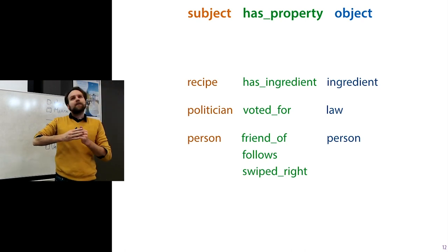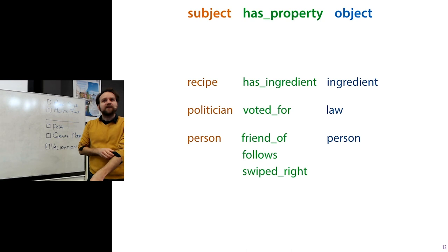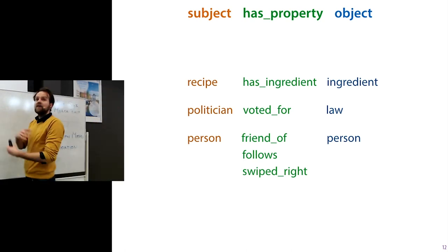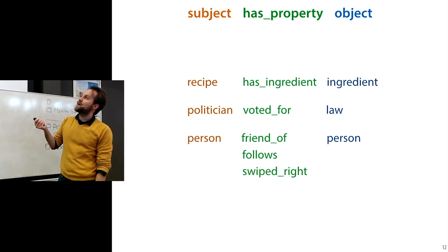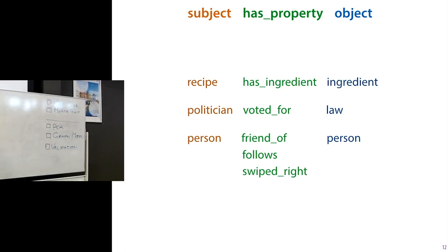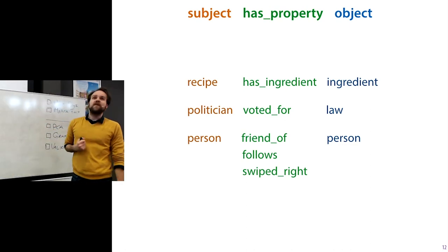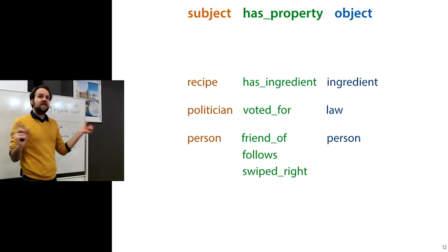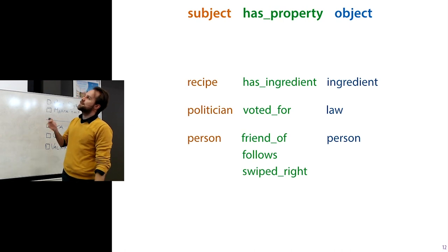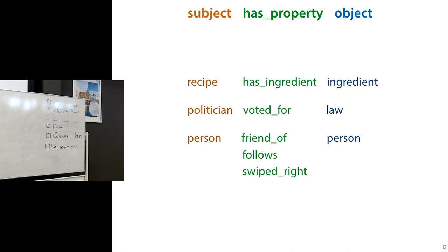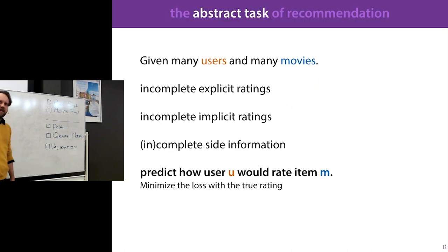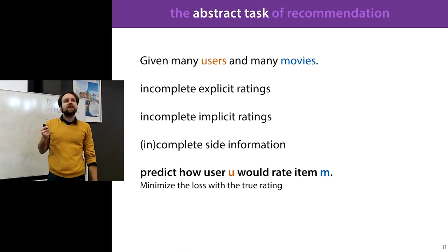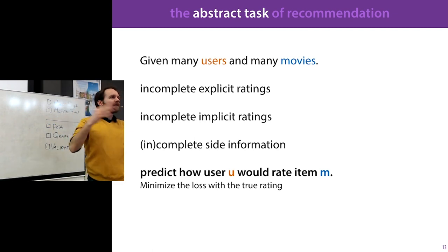Another example: European Parliament voting data — who voted for which law — can be modeled as predicting which politician will vote for which law based on other politicians' votes. Sometimes the subject and object come from the same set, such as in social networks where you model friend-of relations between users. For the rest of the lecture, we'll talk in terms of users and movies, but bear in mind it extends to a broad range of settings.